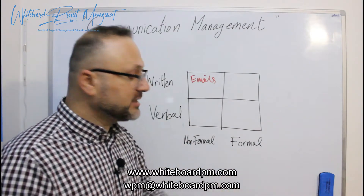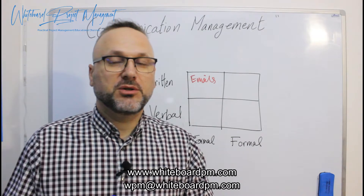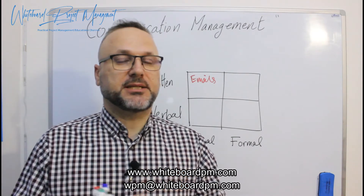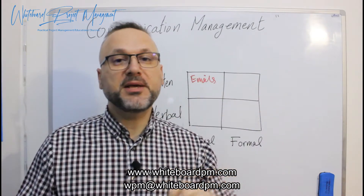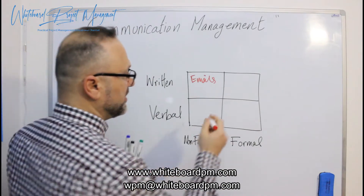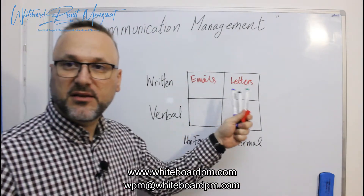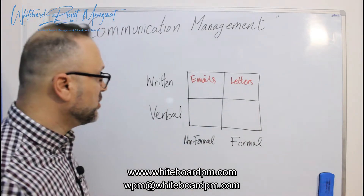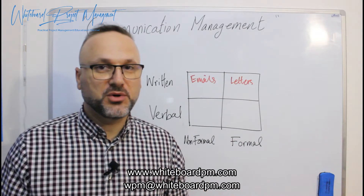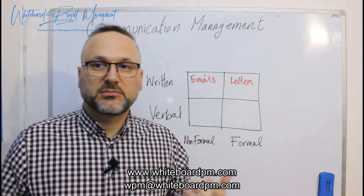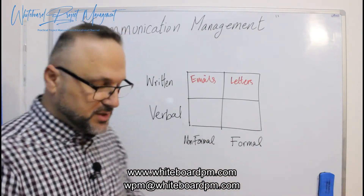Moving to the formal way: as a project manager, when you want to distribute something officially, you write an official letter to the client or stakeholders. This letter has a stamp, a company letterhead, and a signature. This is the formal written way — letters. Letters have the highest value of the communication method. The verbal non-formal way is when you receive a phone call from a colleague and discuss a problem or make a plan — this is a normal discussion.